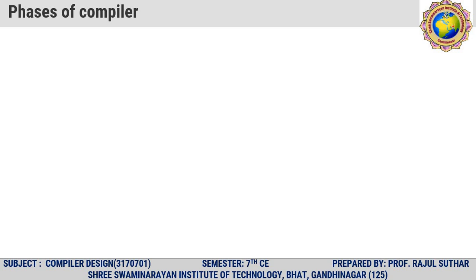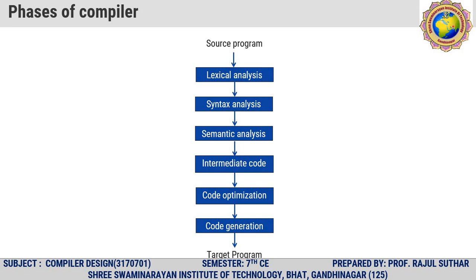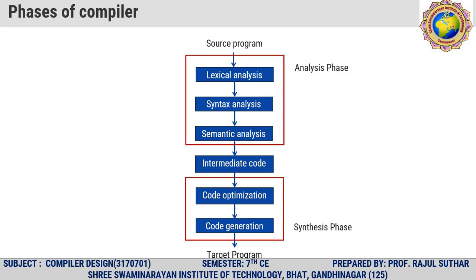Hello friends, welcome to the video tutorials of compiler design. In the previous session of unit 1, we discussed about the phases of compiler. This is the phase of compiler — total six phases. It starts with the source program: lexical analysis, syntax analysis, and semantic analysis, called the analysis phase. Code optimization and code generation is called the synthesis phase. Between analysis and synthesis phase, one intermediate code is used. We are converting the source program to the target program.